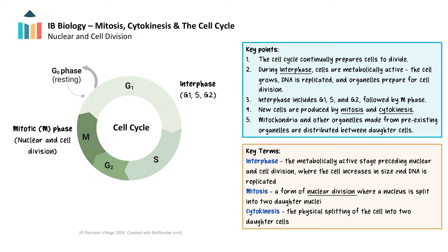The cell cycle consists of four main phases: G1 or GAP1, S or synthesis, G2 or GAP2, and M or mitosis. These phases represent a continuous process that ensures the cell is prepared for division and that division occurs accurately. Note that the resting phase, or G0 phase, is a period where cells are not actively prepared to divide.